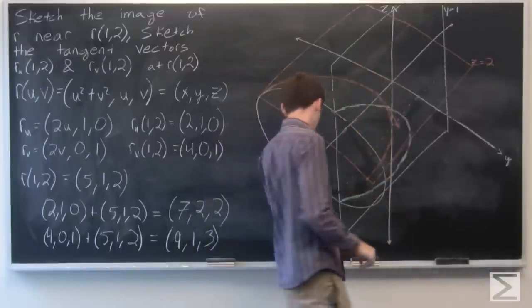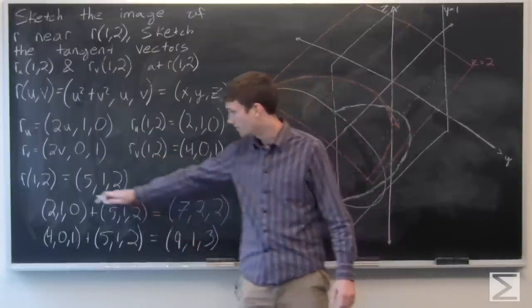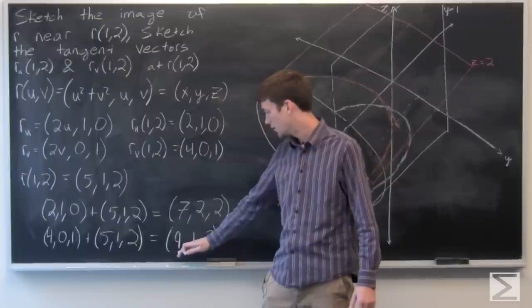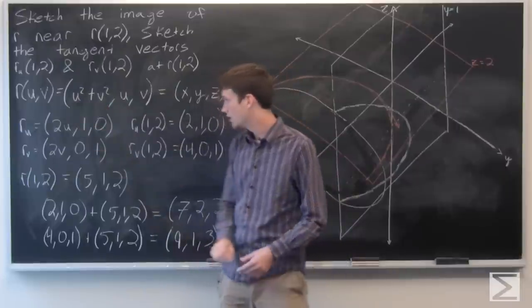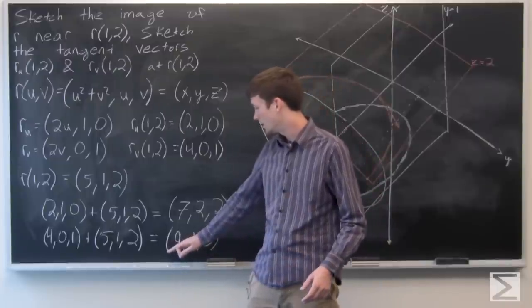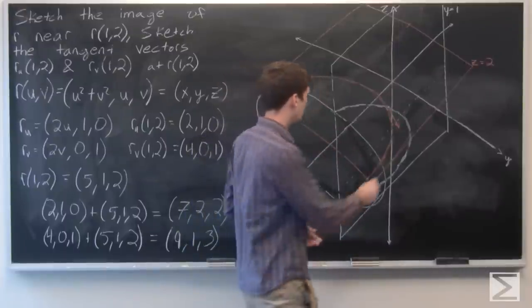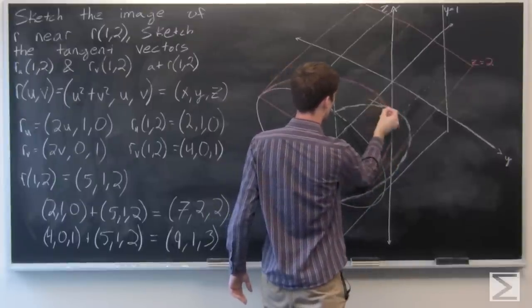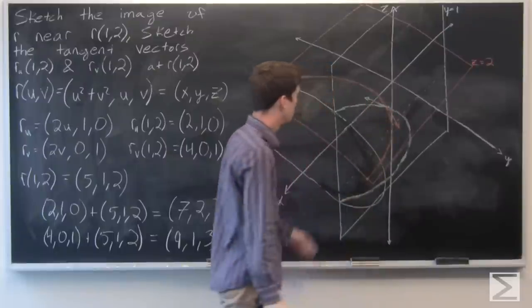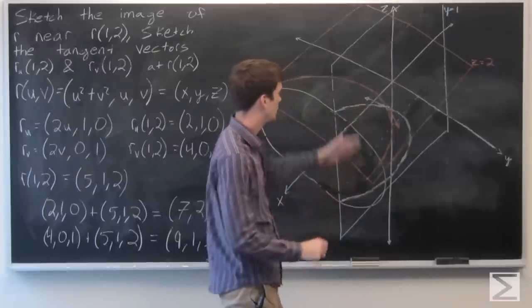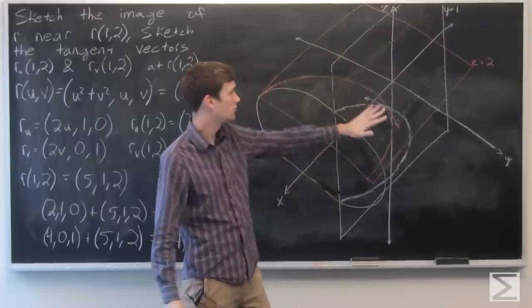And similarly, for our r sub v at (1,2), it's going to be going from the point (5,1,2) to the point (9,1,3). If we let y=1 and z=3, we get 9 plus 1 is 10. So again, the x is going to be one component less for that. And we get the vector as follows. And again, these vectors are going to be on the plane where y equals 1 and z equals 2, respectively.